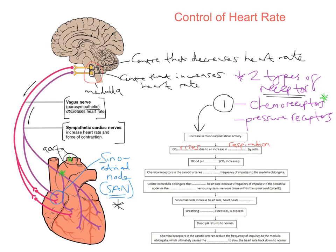So the blood pH falls as CO2 increases. The chemoreceptors in the carotid arteries detect this and increase the frequency of impulses sent to the medulla oblongata. So you get more signals going to the medulla oblongata from these chemoreceptors in response to the lower blood pH.